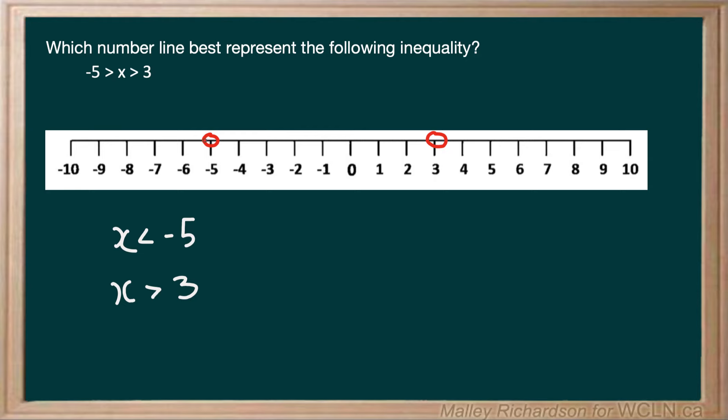x is less than negative 5, so we draw an arrow to negative infinity. And x is also greater than positive 3, so we draw an arrow to positive infinity.